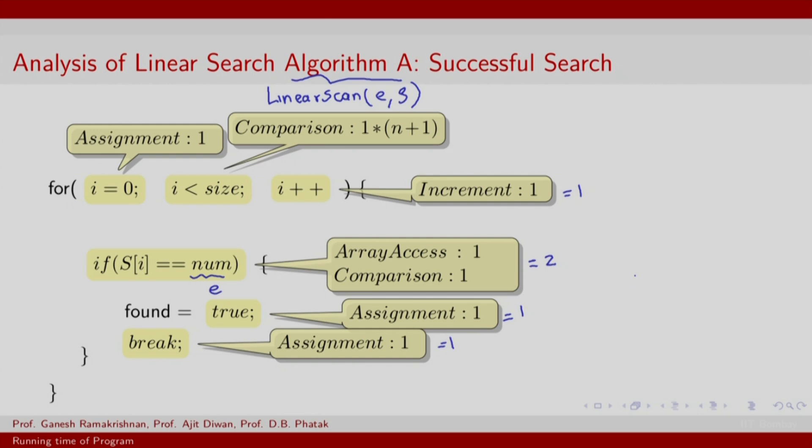So, the overall cost will basically depend on where the element is found. So, in the case of a successful search, you will keep doing these comparisons and the increments till the element is found. And if the element were found at the end of the array, you will have to do these up for n or n minus 1 steps. The assignment steps, the last 2 assignment steps will be called exactly once.